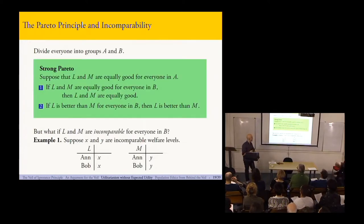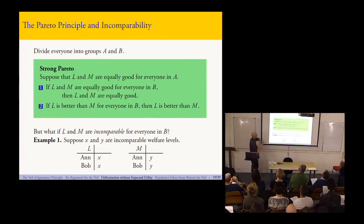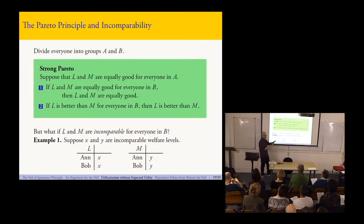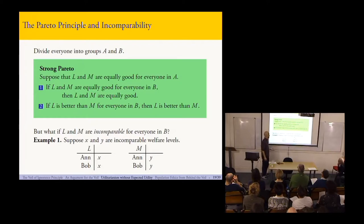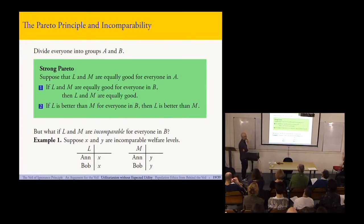Here's the standard version of the Strong Pareto principle. We have a population divided into groups A and B. The lotteries L and M being compared are equally good for everyone in A, so we focus on people in B. The first part says: if L and M are equally good for everyone in B, then they are equally good overall. The second part says: if L is better than M for everyone in B, then L is better than M impartially. This is sometimes referred to — following John Broome — as the principle of personal good, since traditionally the Pareto principle is stated in terms of preferences, but this is an axiological principle.